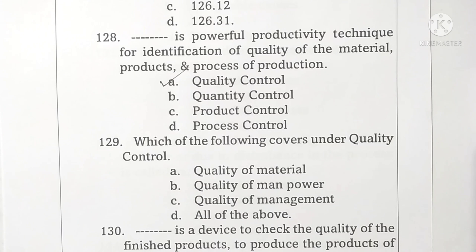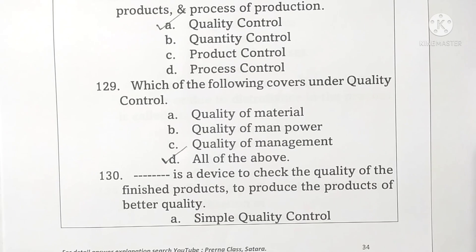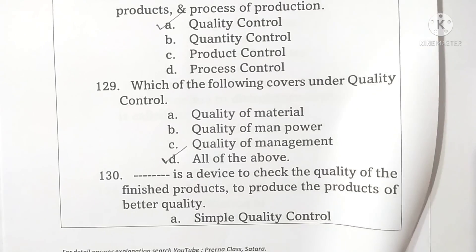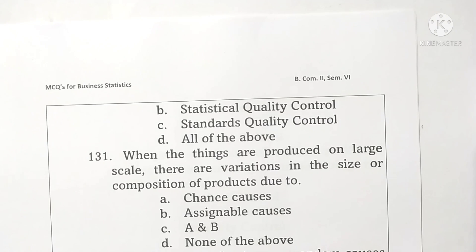All of the above is the correct answer for question 129. Option D is correct. Question 130: statistical quality control is a device to check the quality of finished products and to produce products of better quality. Option B is correct.